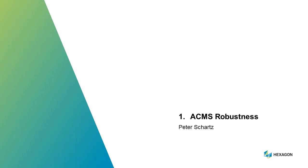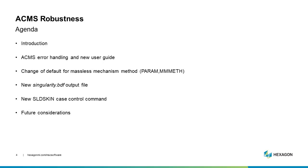This project covers ACMS robustness and error message improvements. There is additional error handling for ACMS error conditions and a new user's guide. We're changing the default to the massless mechanism method. When we have massless mechanisms in the model, there's a new output file generated. There's also a new case control command called solid skin, which I will describe, and then we'll talk about future work.